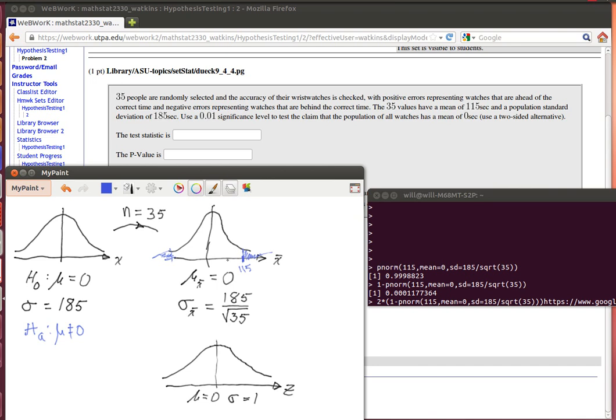The p-value will be this blue area times two. In R, I've calculated that blue area. Remember that pnorm calculates the area below 115 in a normal distribution that has a mean of zero and a standard deviation from the central limit theorem.